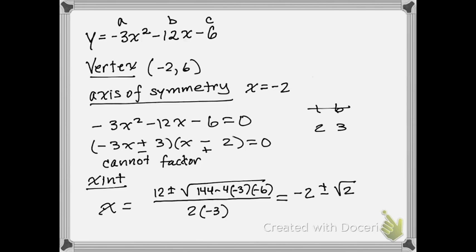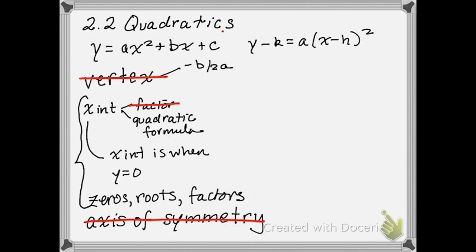Now let's look at the other form. We've done everything for the first form — the vertex, x-intercepts via the quadratic formula, zeros, roots, and factors. Now we're going to do everything for the other form: y minus k equals a times (x minus h) squared.